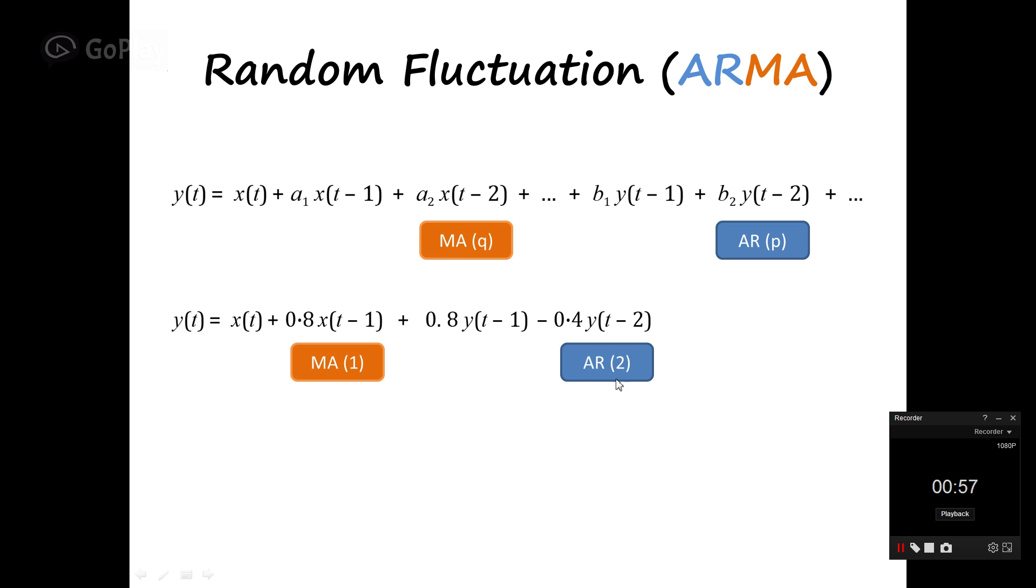For example, here the order of autoregressive part is 2 because the largest lag here is 2, and the order of moving average is 1 because the largest lag or delay is 1. Another example: the order of autoregressive is 3 because the largest lag is 3, and the order of moving average part is 0.